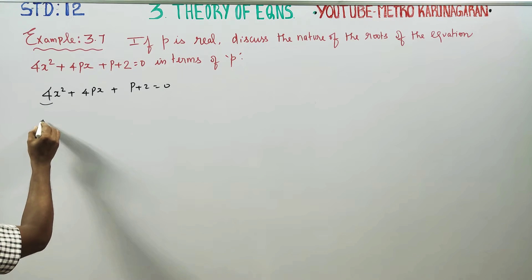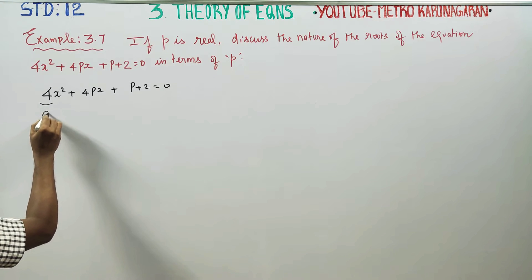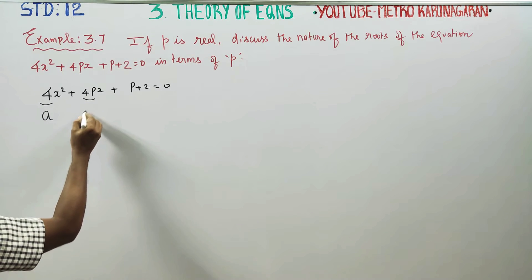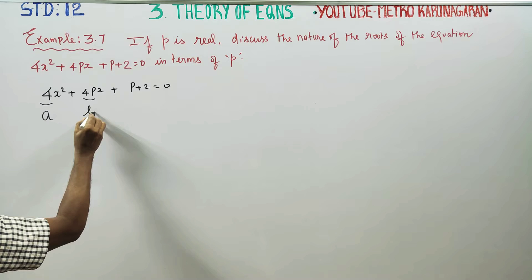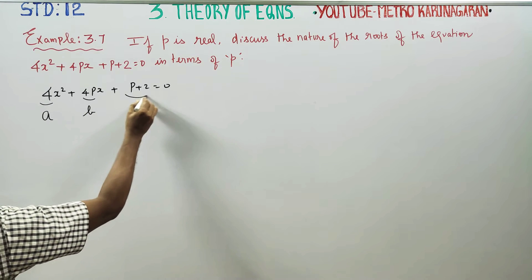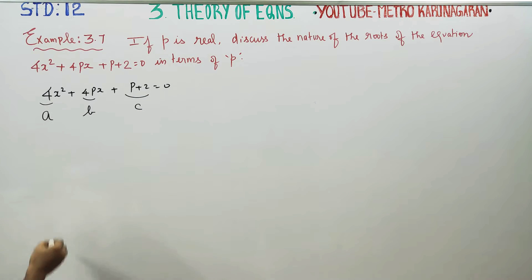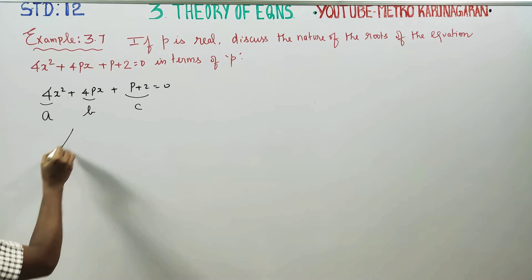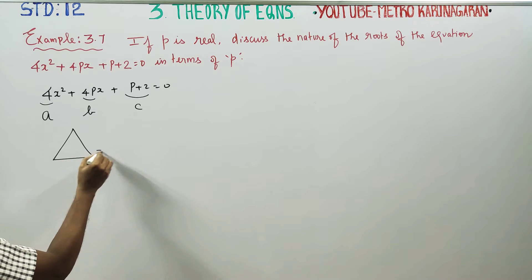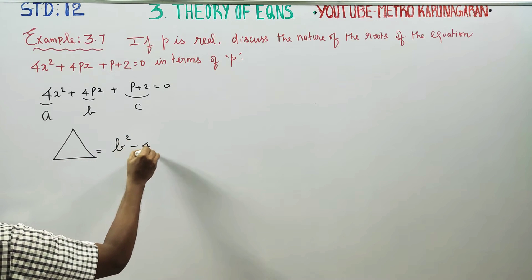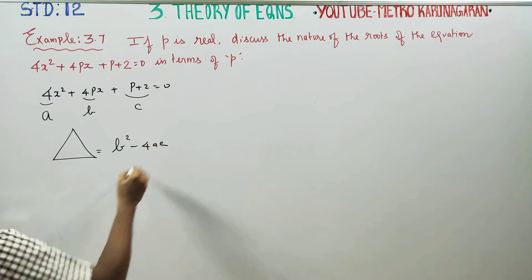This is the x squared coefficient a, the x coefficient b, and the constant c. I am going to find the discriminant. The discriminant formula is b squared minus 4ac.